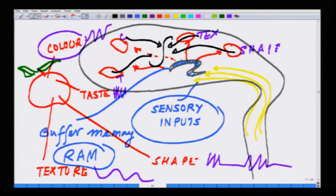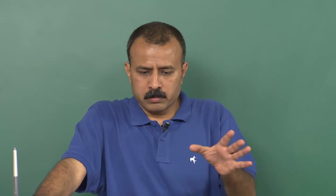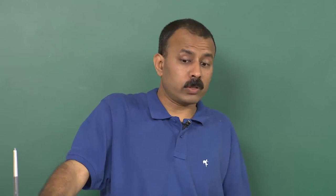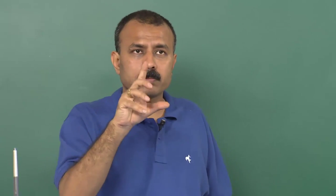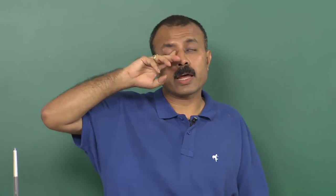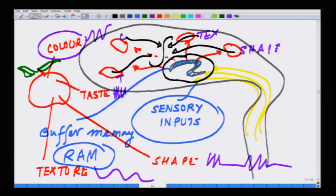Essentially, the hippocampus is acting as the zone of buffer memory, and from the hippocampus slowly and gradually the information is being transmitted to the different areas of the brain where they are permanently stored. So when this zone starts to die off, we do not acquire any further memory, and many times we lose our own identity. This is the most accepted model of memory acquisition today.